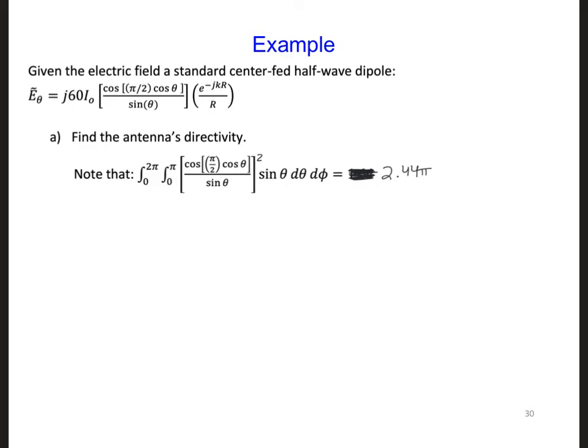In order to find the directivity, we need to find the normalized radiation intensity, F. And in order to find F, we need to find S.